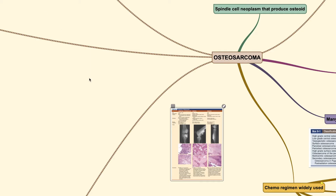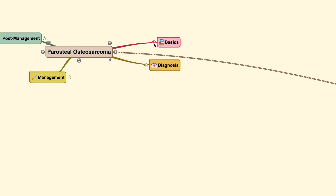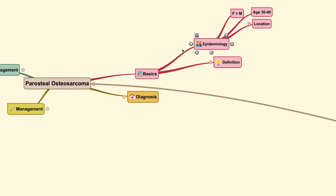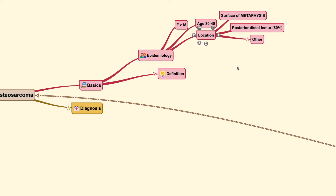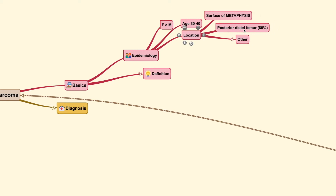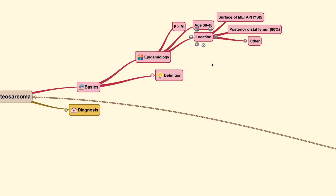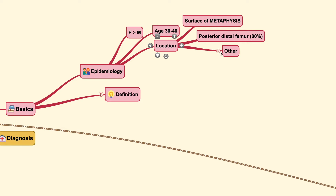Let us move on to the basic discussion regarding the parosteal and periosteal types, starting from the parosteal type. For this subtype of tumour, you can find it at an age that is slightly older than the classic type, which is usually found in the second decade. For location, it is usually found on the surface — unlike the classic type which comes from within the bone medulla, the parosteal type is over at the surface of the metaphyses, located approximately 80% at the posterior aspect of the distal femur.